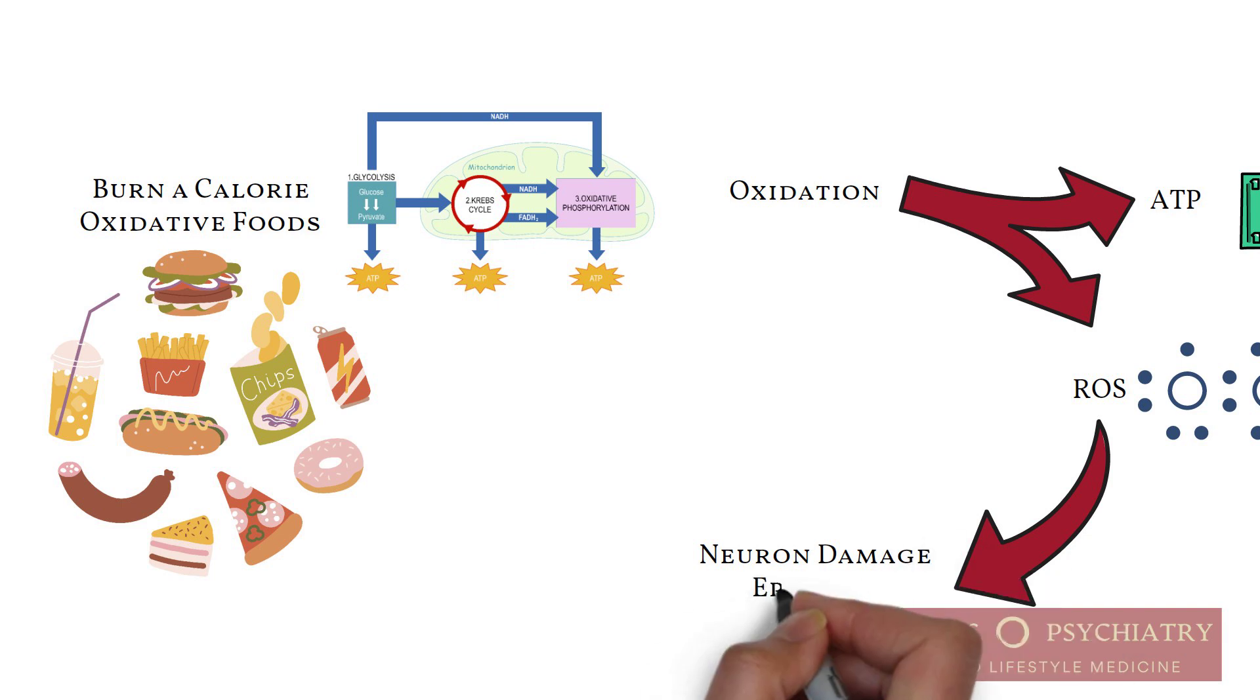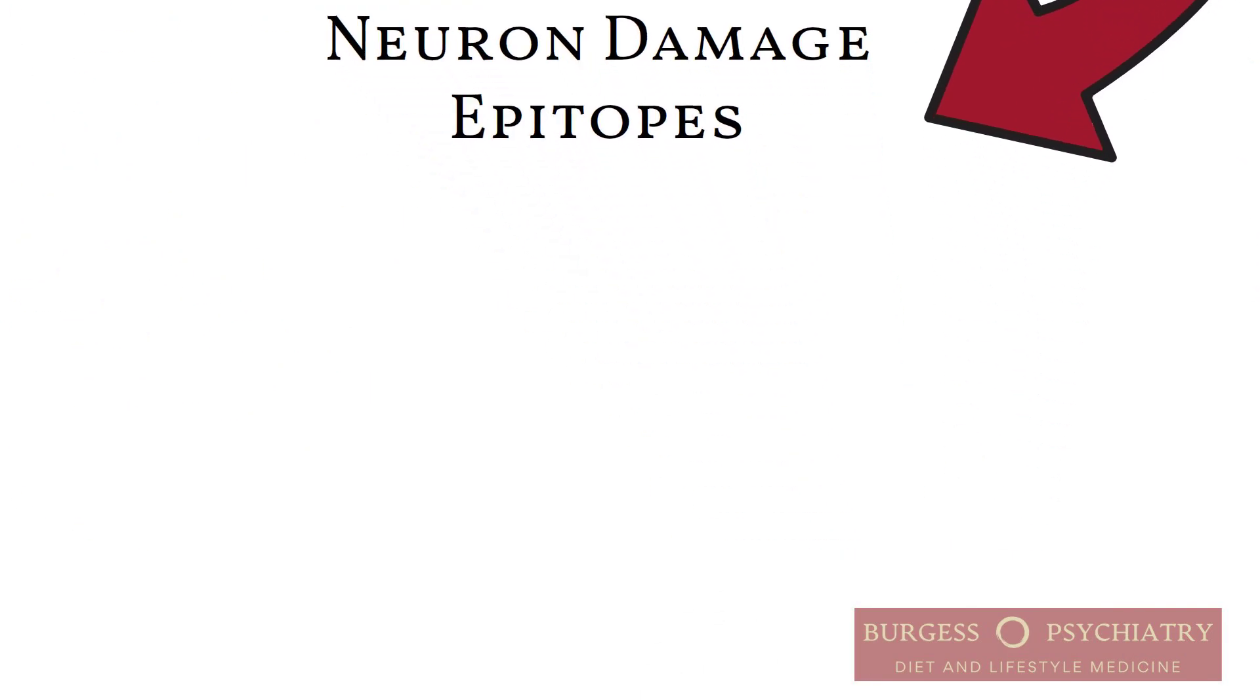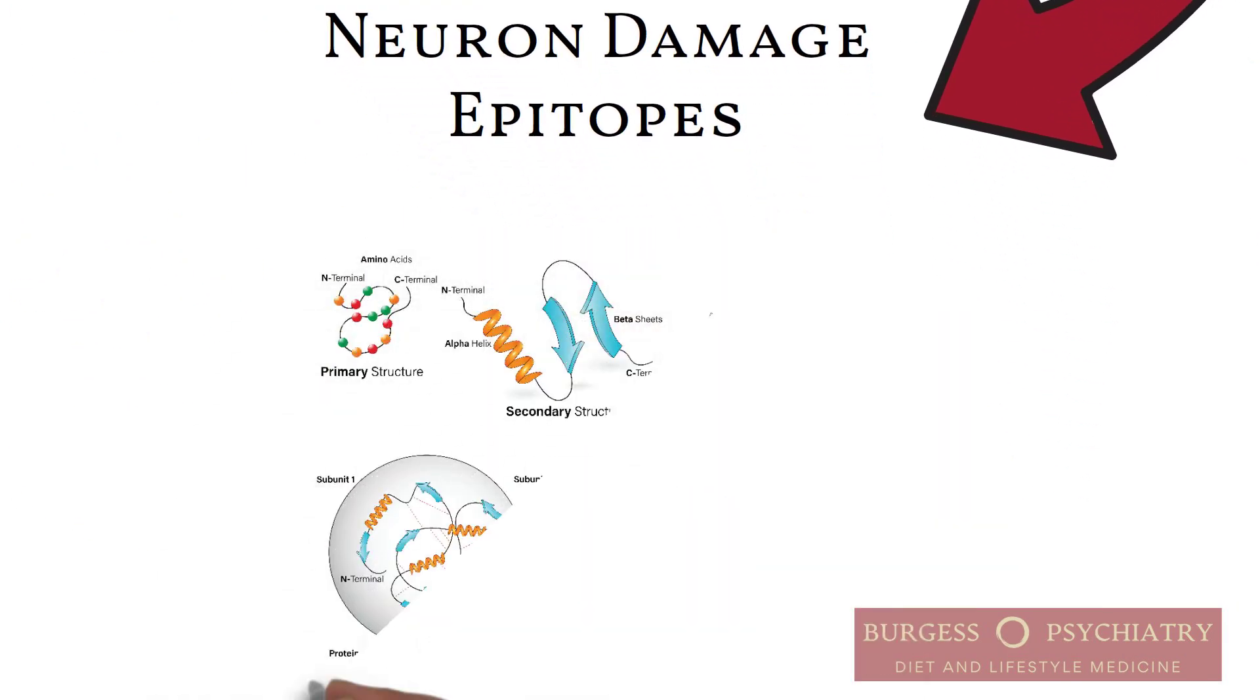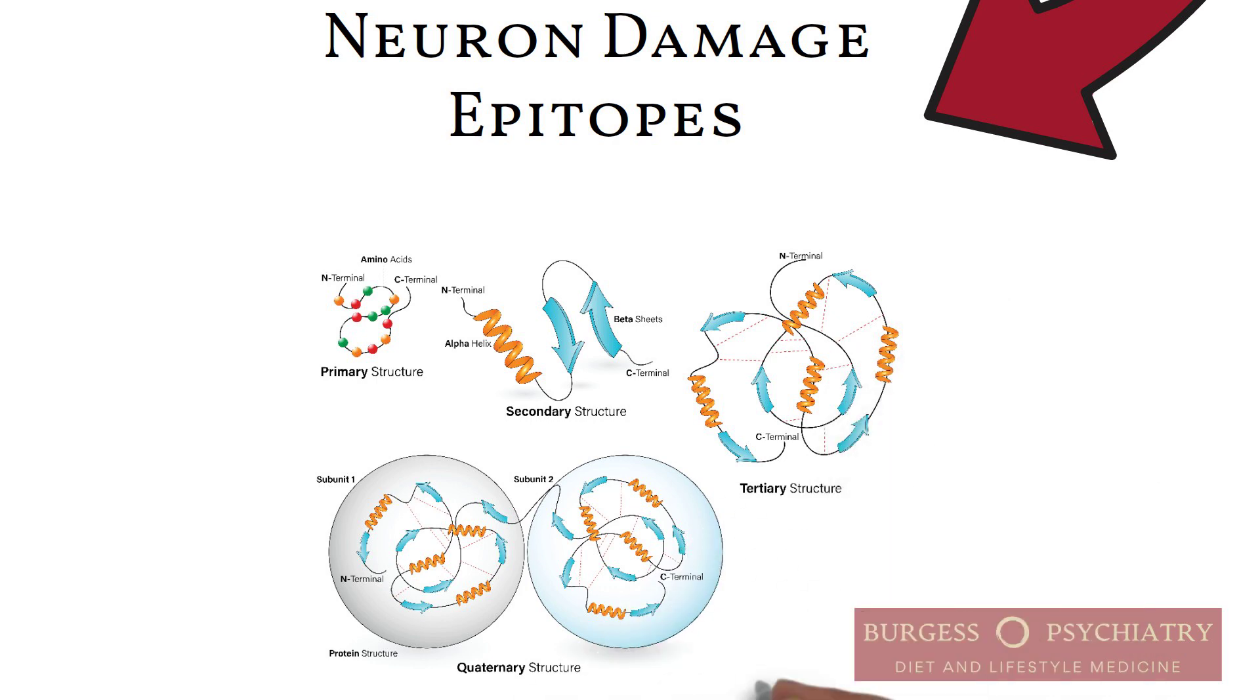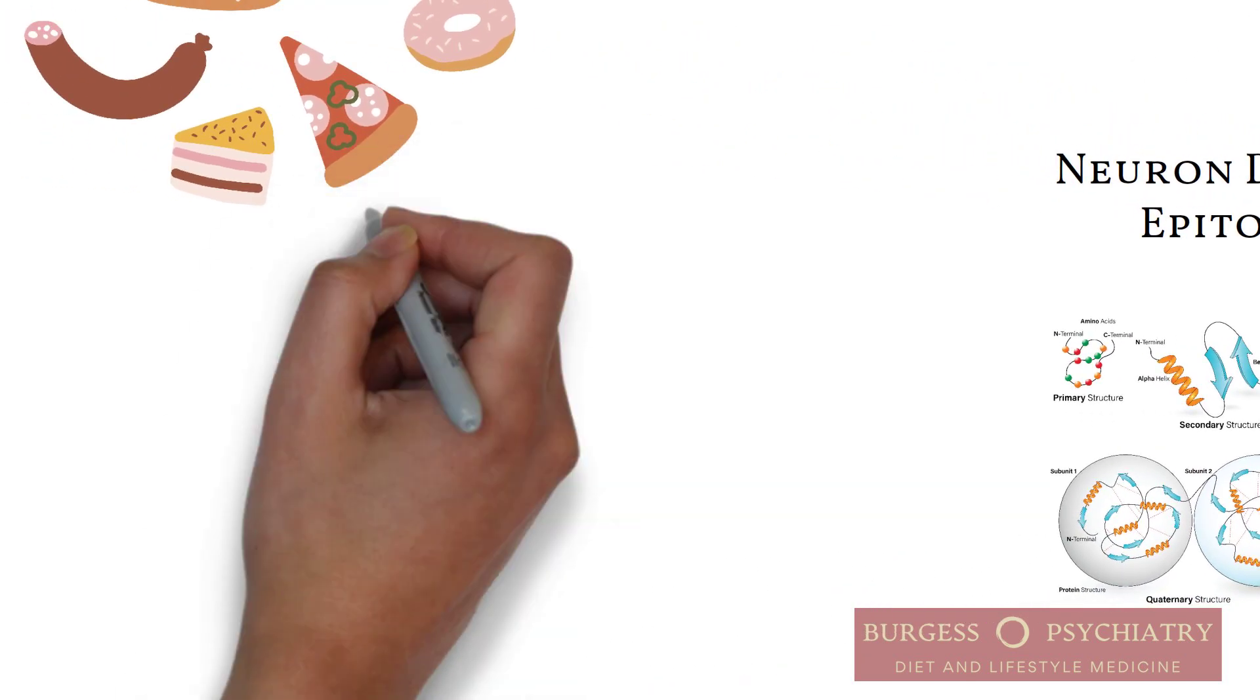Now, you have damaged proteins in the neuron. Why? Because proteins fold into their specific shape due to the charges on their respective amino acids. And as soon as you rip an electron off of a protein, the protein will refold in a deformed way.